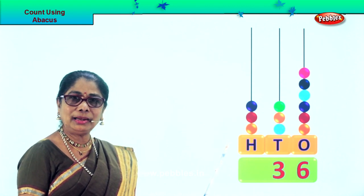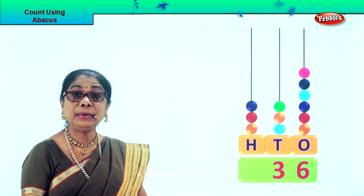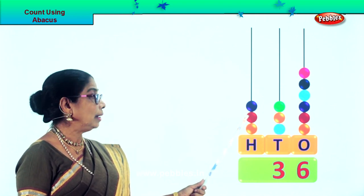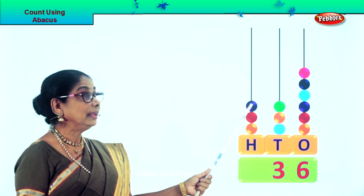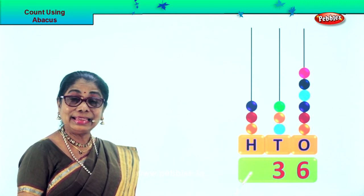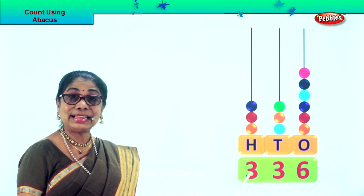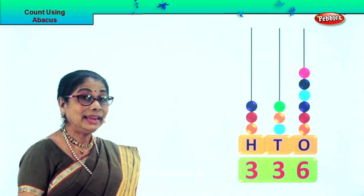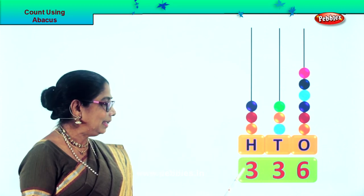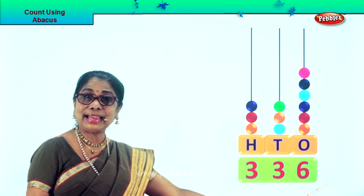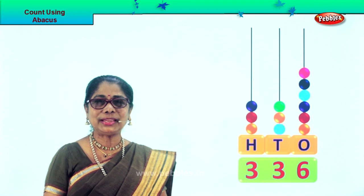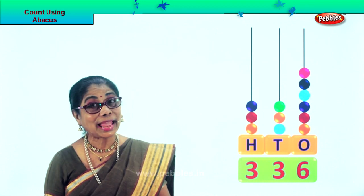Let's go to the 100s place. We'll count in 100s: 100, 200, 300. We put down number 3 — each is 100. Now let's read the number: 336. Did you enjoy counting using abacus?